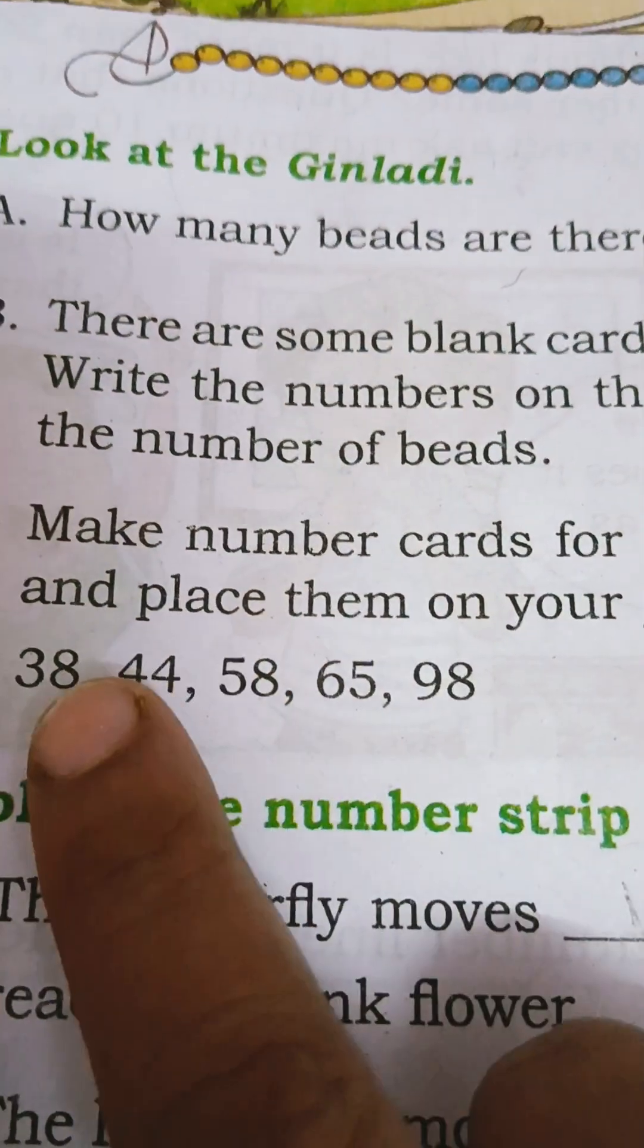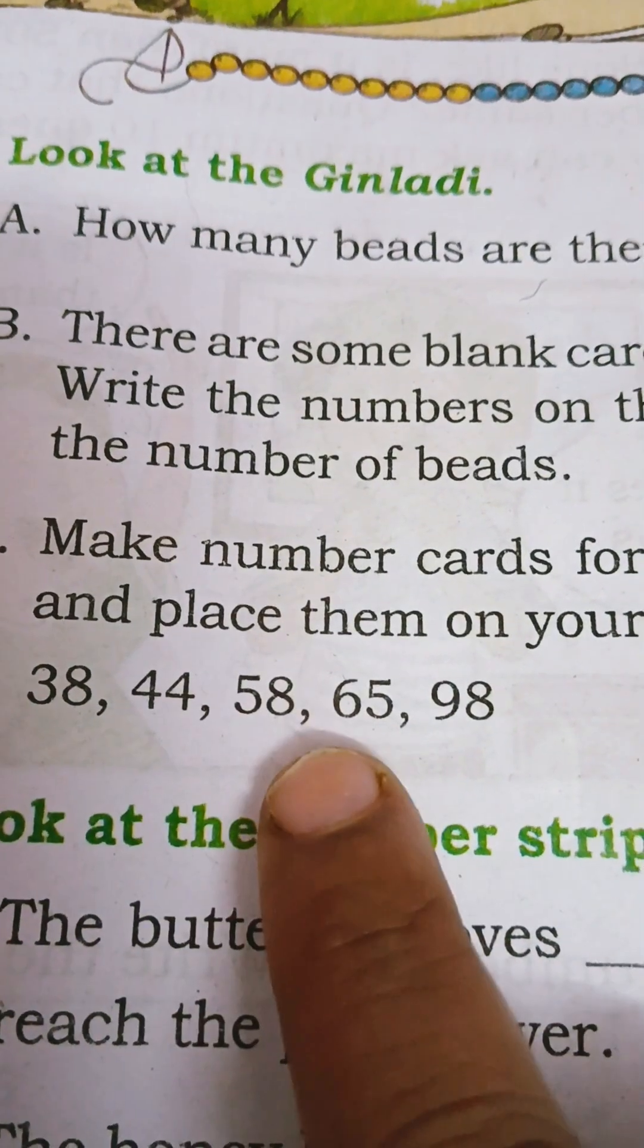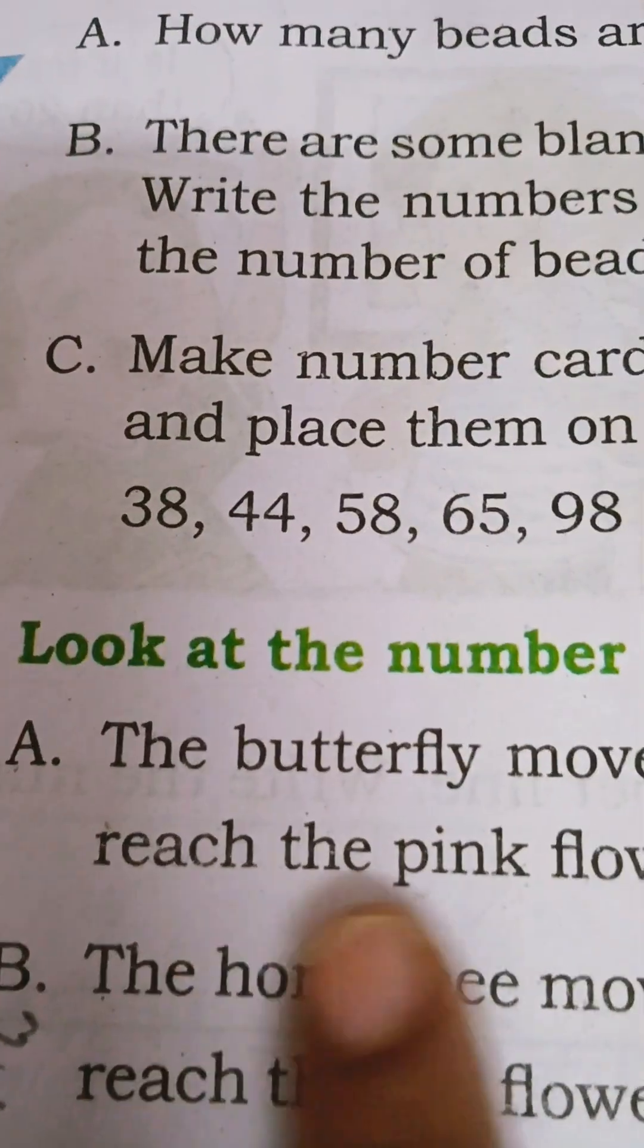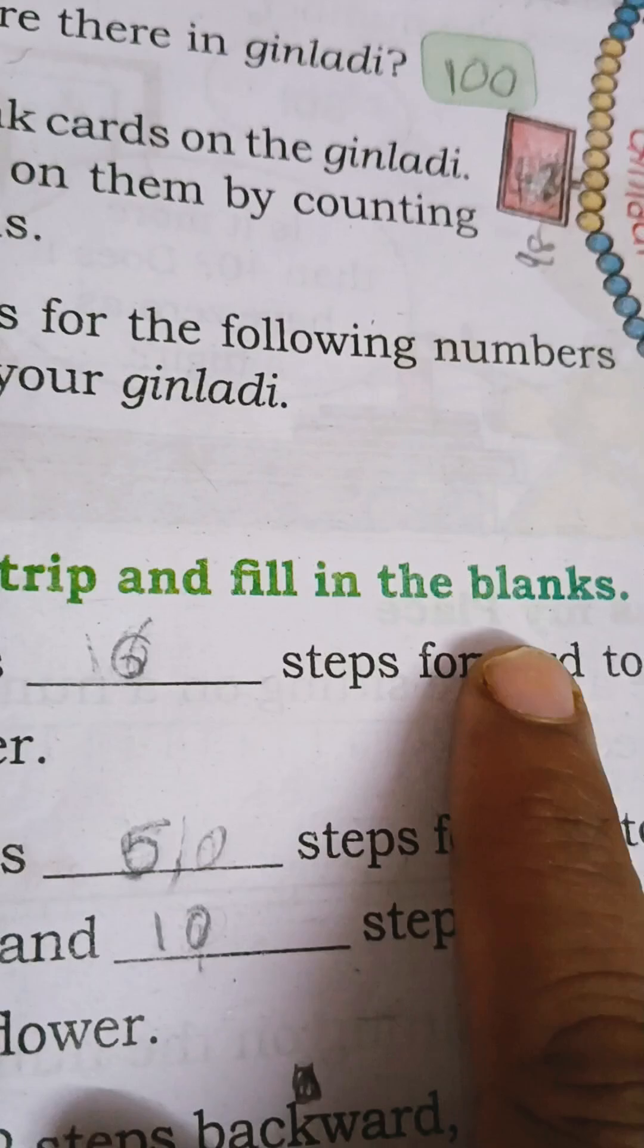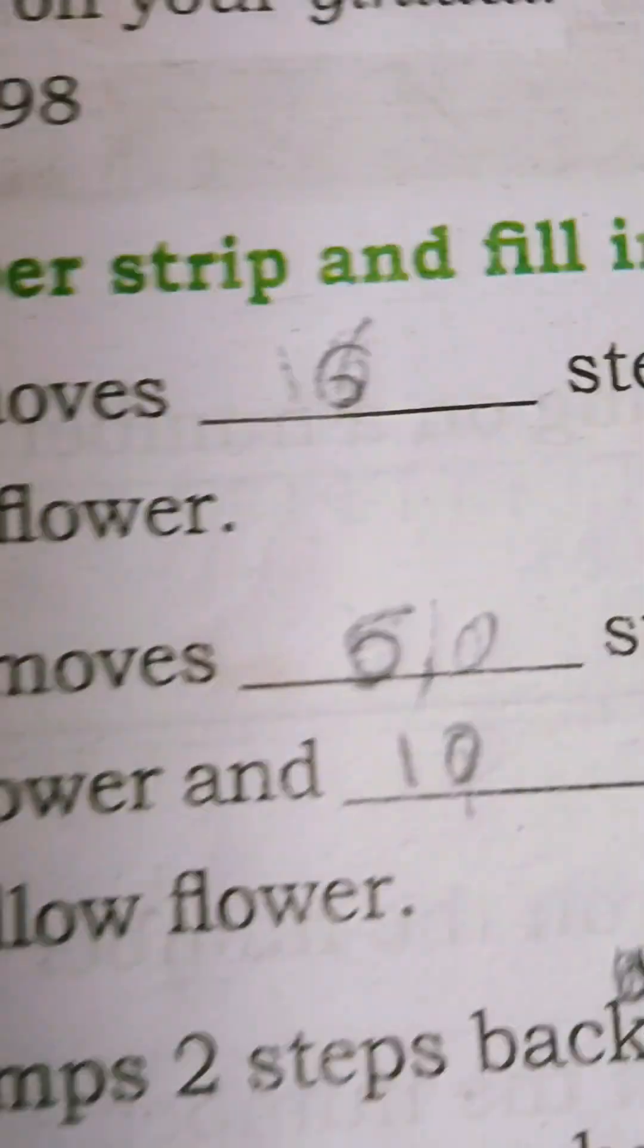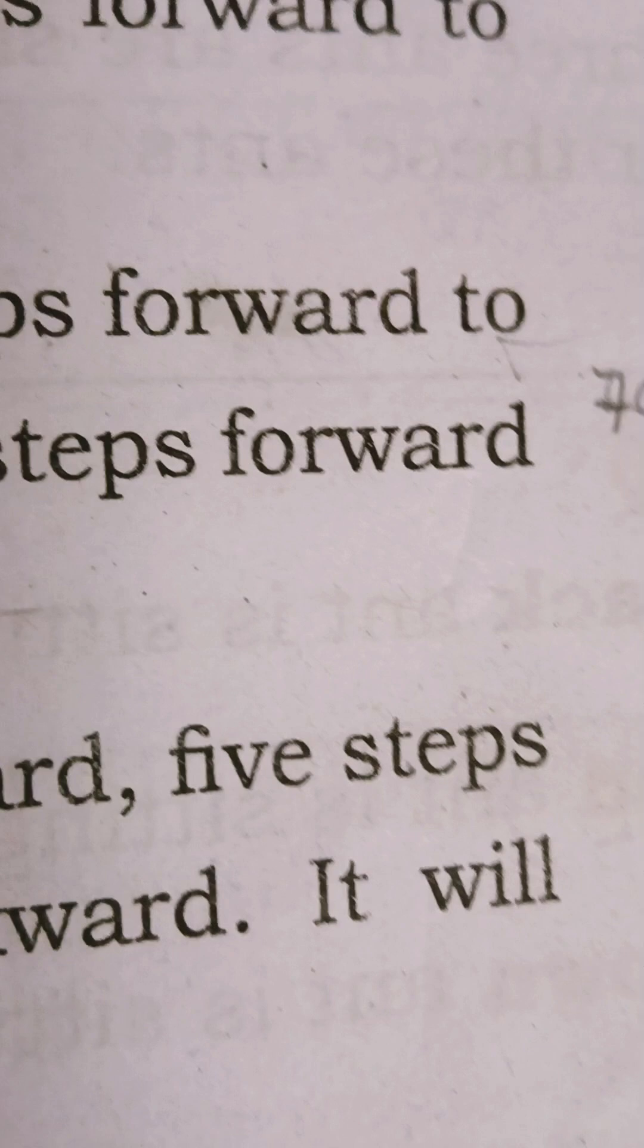Like that you have to make 38, 44, 58, 65, 98. Next, look at the number strip and fill in the blanks. This is number strip from 49 to 100.